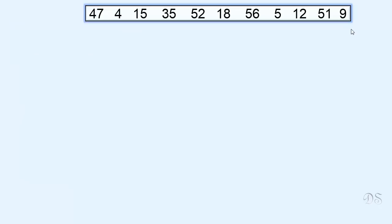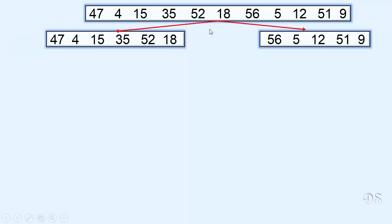This is a list of 11 elements. It is divided into two sublists — this one contains six elements and this one contains five elements. These two sublists are to be sorted recursively using merge sort.